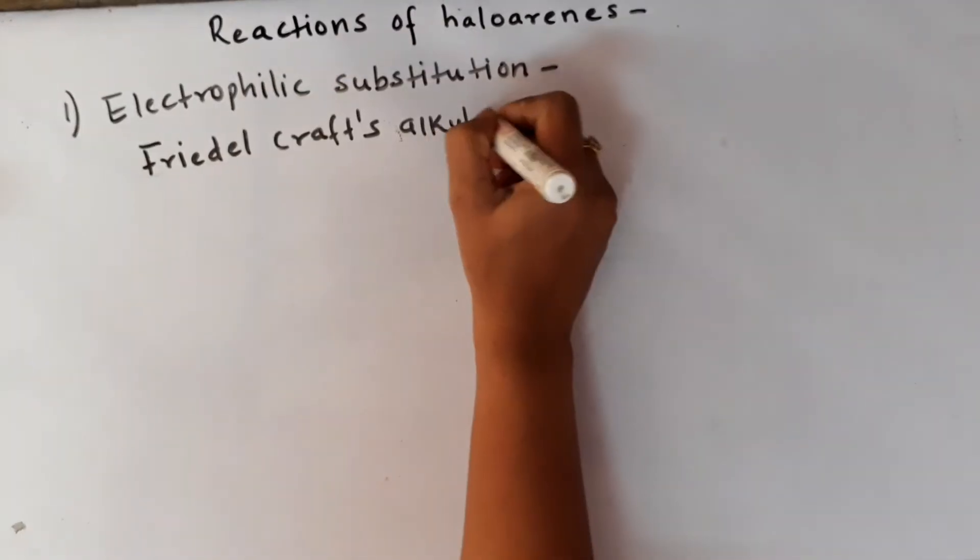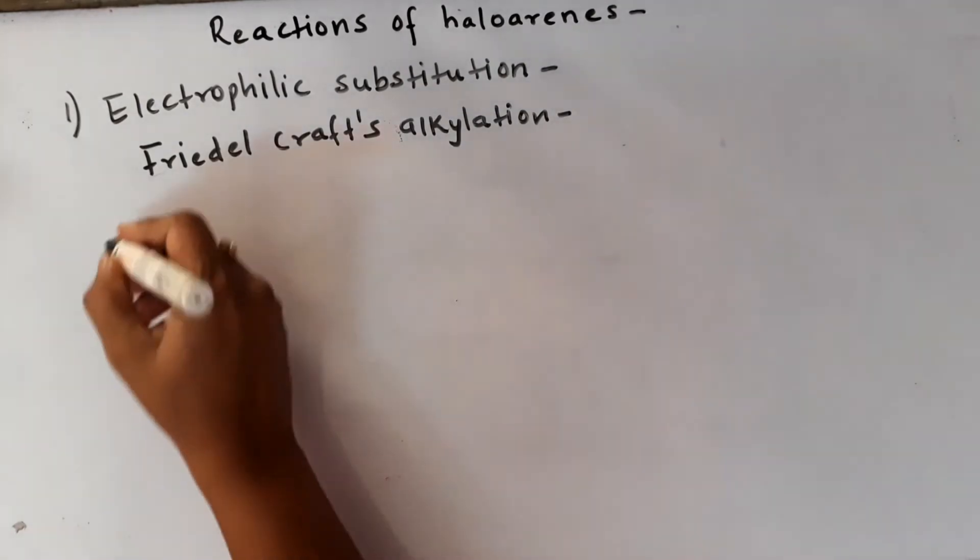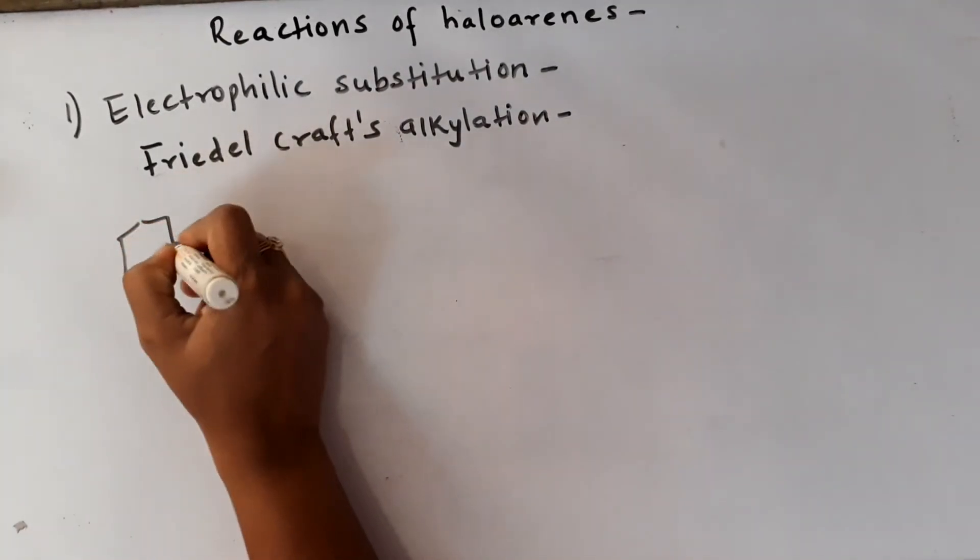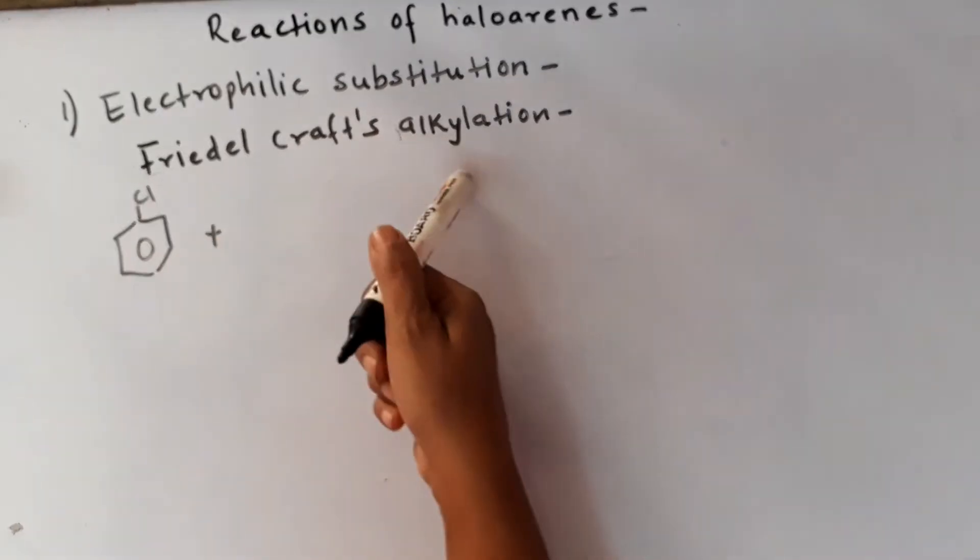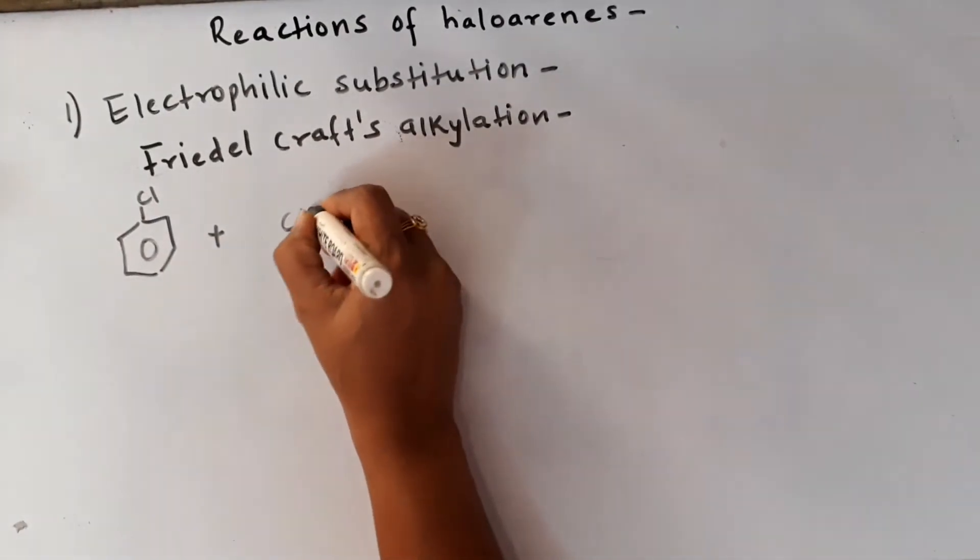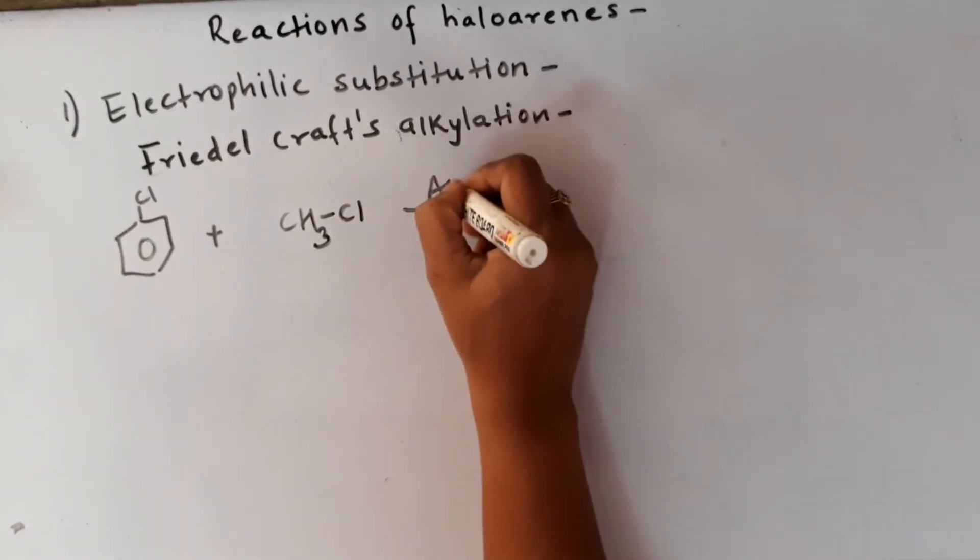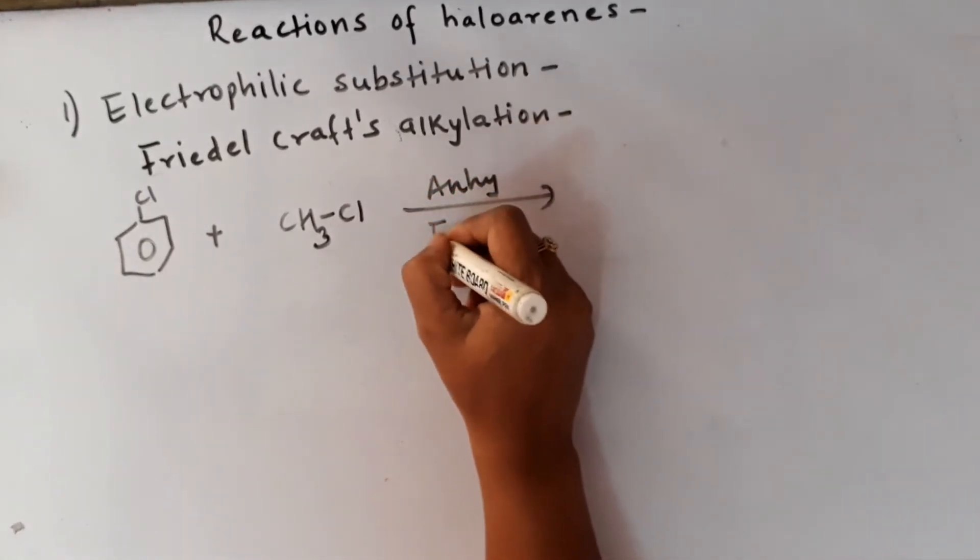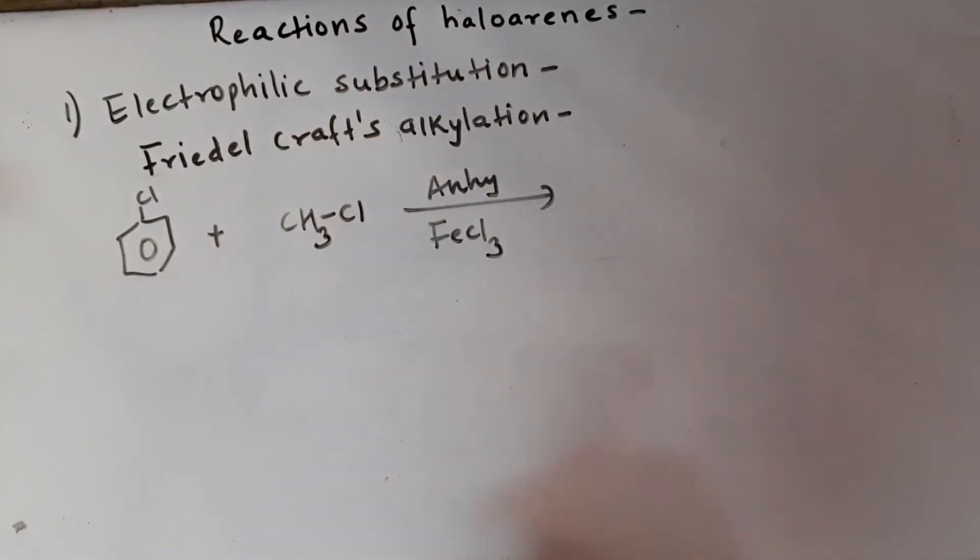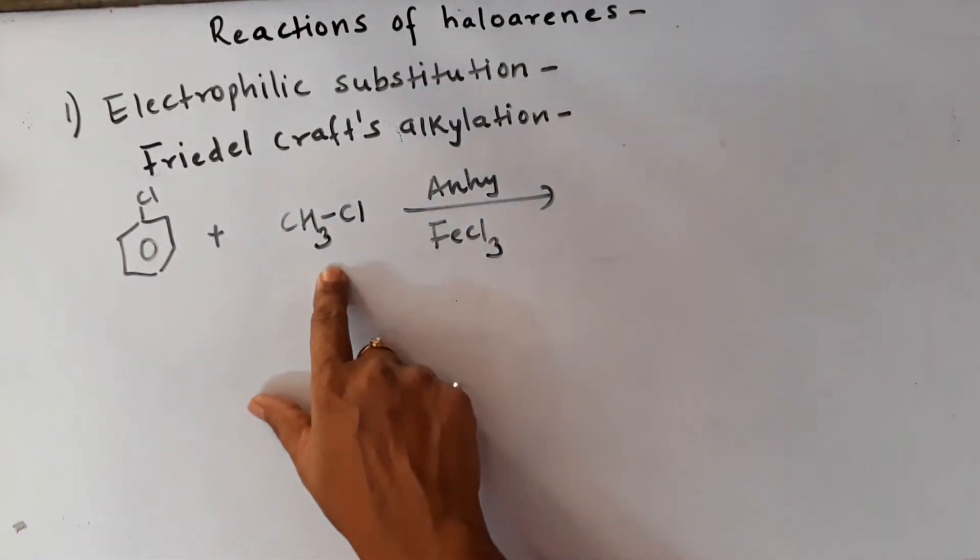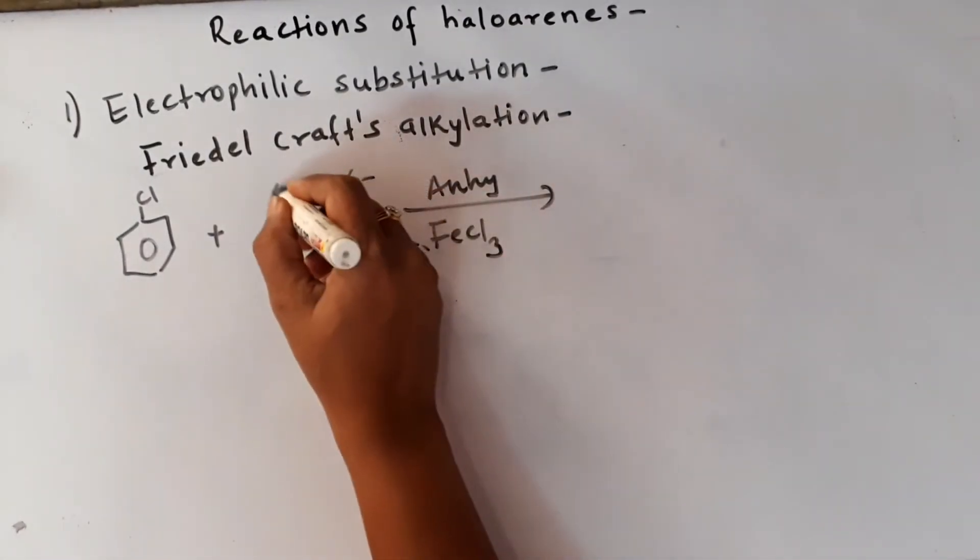Let's have a look at two more reactions of electrophilic substitution. The first is Friedel-Crafts alkylation, where we are going to alkylate a haloarene like chlorobenzene. The alkylating agent which I'm going to use is alkyl chloride, that is methyl chloride in this case, in the presence of Lewis acid anhydrous aluminium chloride or ferric chloride. Let's see the answers we will get here - ortho and para.